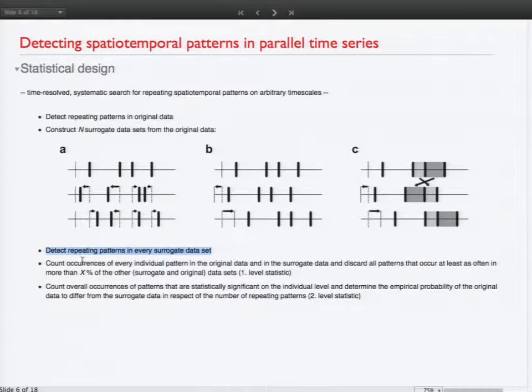Then we repeat the whole analysis on each of these surrogate data sets. And then we count the occurrences of every individual pattern that we found in the original data and in the surrogate data sets and compare them on an individual level to the counts of that pattern in the other data sets. And do a very simple non-parametric statistical test on it. Maybe a binomial test or whatever you like. It doesn't matter on that level. And discard all the patterns that are not significant in a statistical way on the individual level. And then do the same thing on a second level and count the overall occurrences of the patterns that are statistically significant. And compare this number between the original data and the surrogate data. This is a very important second level test and if the data passes this test, then we know that there is some structure in the original data as compared to the surrogate data that is non-random. And then we can have a closer look at the results.